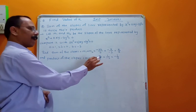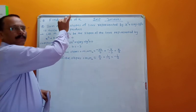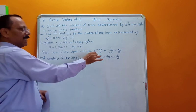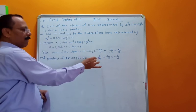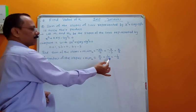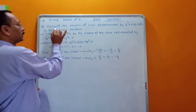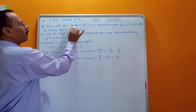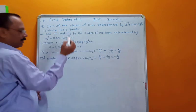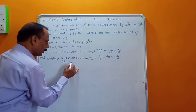The product of the slopes formula is m1·m2 = a/b. This is a very important formula for all examples. Here a = 1 and b = −3, so m1·m2 = 1/(−3) = −1/3. Now the condition: sum of the slopes is twice their product.